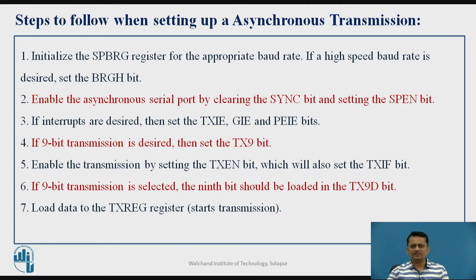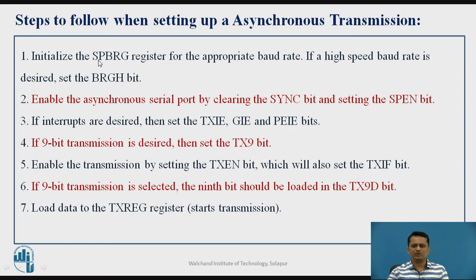When you are doing transmission in asynchronous mode, what steps do you need to follow? If you recall from the previous video, we have seen how the module is controlled by two special function registers TXSTA and RCSTA, and how baud rate selection works. The first thing is you have to make sure you are selecting the proper baud rate, and that baud rate selection is done by the SPBRG register — you have to load the appropriate value into SPBRG.